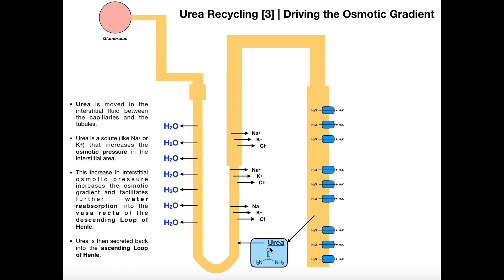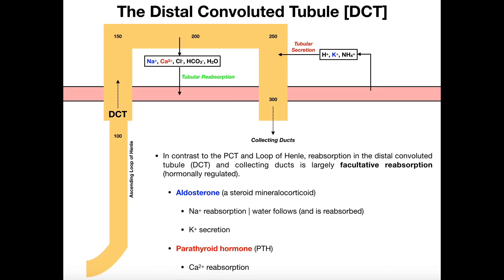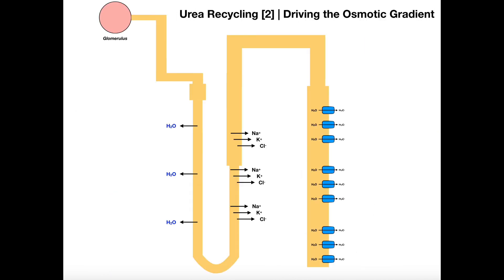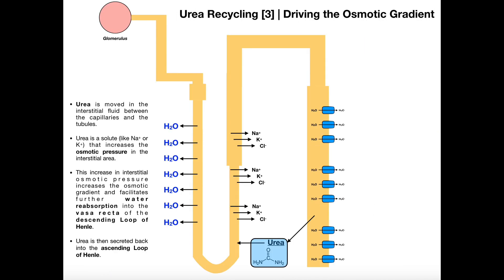This process serves to get more water reabsorbed. With the nephrons, even though we do have to eliminate some water, getting as much of this water reabsorbed as possible is probably the most important function — it's very, very critical. Hopefully this made sense to you. In the next video, we're going to discuss the distal convoluted tubule and the collecting ducts. Please make sure to like this video and subscribe to my channel for future videos and notifications. Thank you very much.